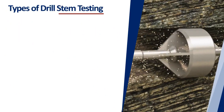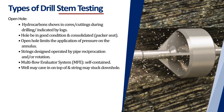Types of drill stem testing. Open hole: hydrocarbons shows in cores or cuttings during drilling or indicated by logs. The hole must be in good condition and consolidated for packer seat. Open hole limits the application of pressure on the annulus. Strings are designed and operated by pipe reciprocation and/or rotation. The multiflow evaluator system, MFE, is self-contained. The well may cave in on top of the string, and the string may become stuck downhole.